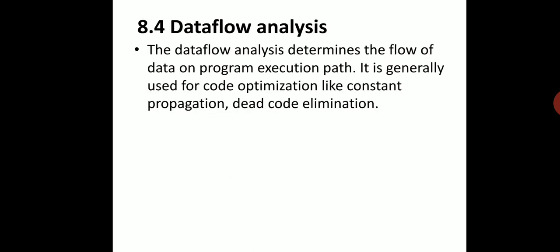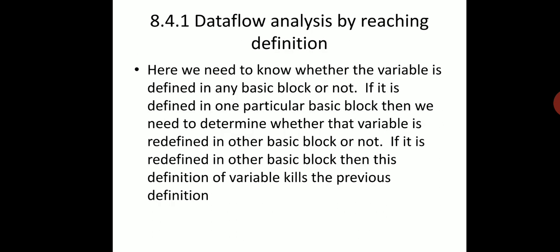The last point from this chapter is data flow analysis. Data flow analysis determines how data is flowed from one basic block to another — or from one part of the program to another. Once we identify how the data flows, we can easily perform optimization by identifying variables. It is generally used for optimizations like constant propagation and dead code elimination. We need to identify which variables are redefined in the program execution path.